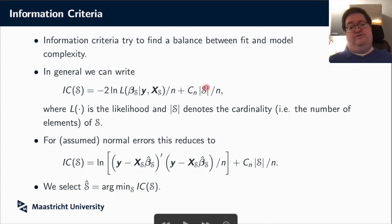So the information criteria in general form look like this. It's minus two times the log likelihood of your parameter vector for that particular model, so indicated by S, plus a penalty term, where the penalty term penalizes if the model becomes more complicated. In the variable selection case, it simply means if you include more variables. So here the absolute value of a set is actually not an absolute value, but it denotes the cardinality. So how many elements are there in a set, or how many variables did you include in your model?